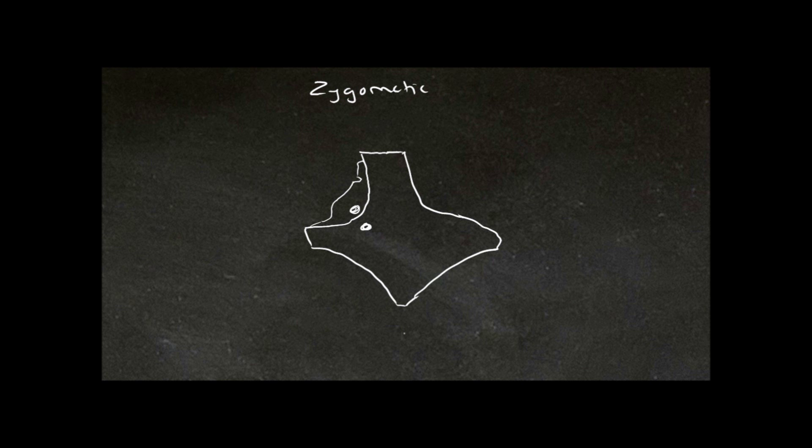Here we're looking at the ectocranial surface of the zygomatic bone, and we need to orientate it first, so we'll look at these processes to do that.